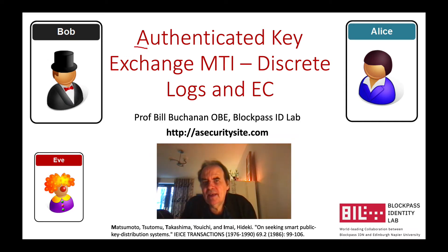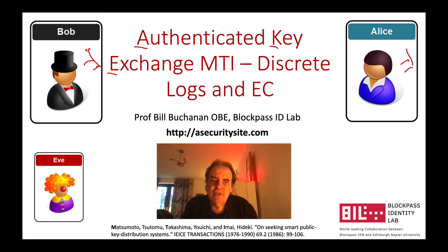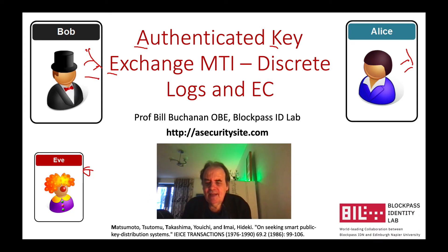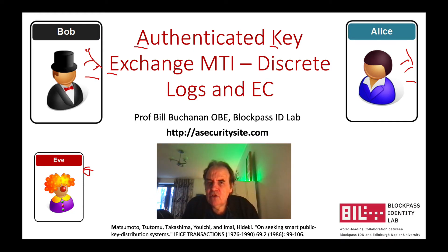Let's look at what's called authenticated key exchange. In this way, Bob and Alice will be able to end up with the same shared key at the end of the exchange, and Eve, even although Eve has been listening to the communications, will not be able to tell what that key is. We'll look at long-term public and private keys and how we can derive a secret key or a session key based on that long-term key.